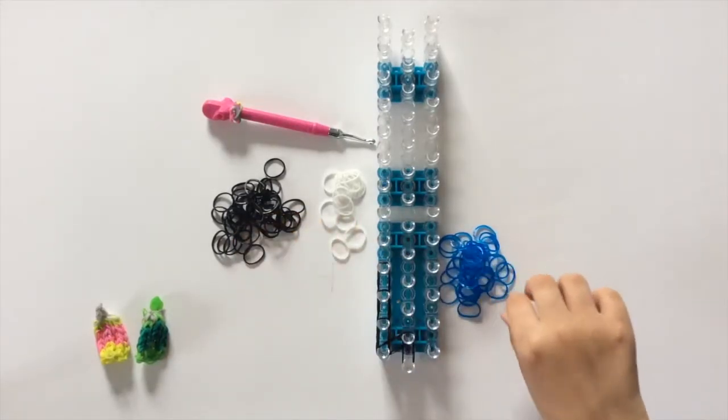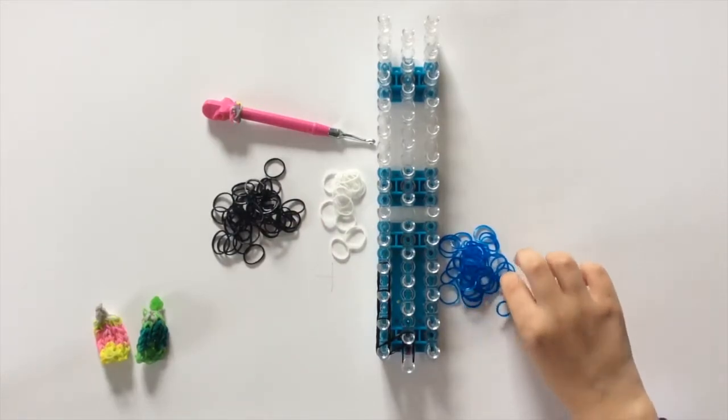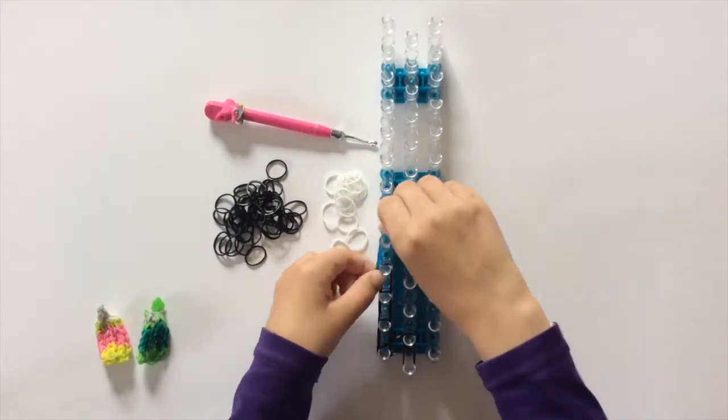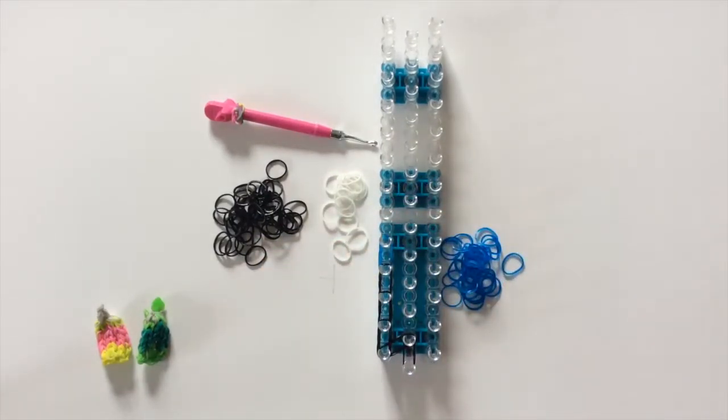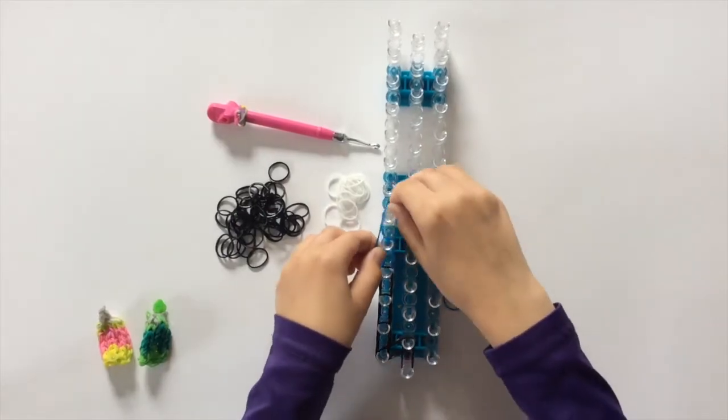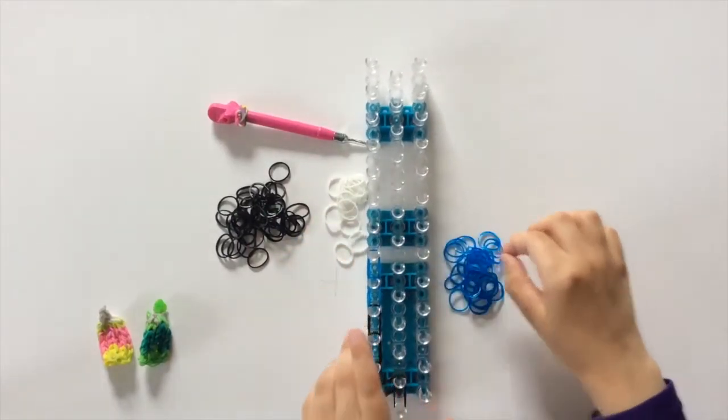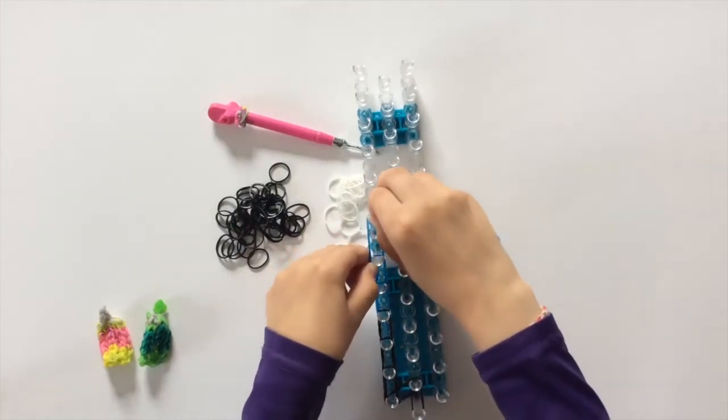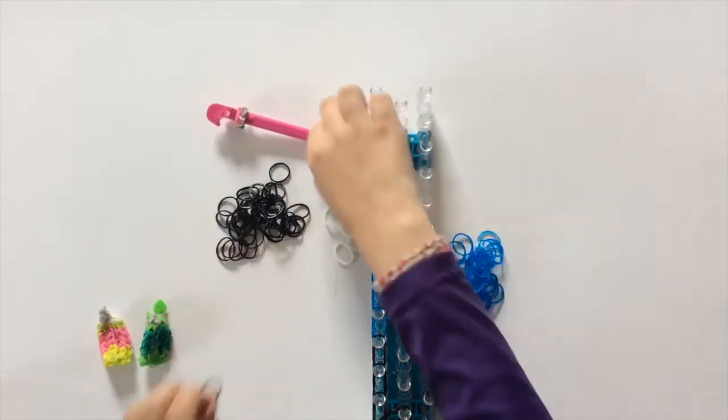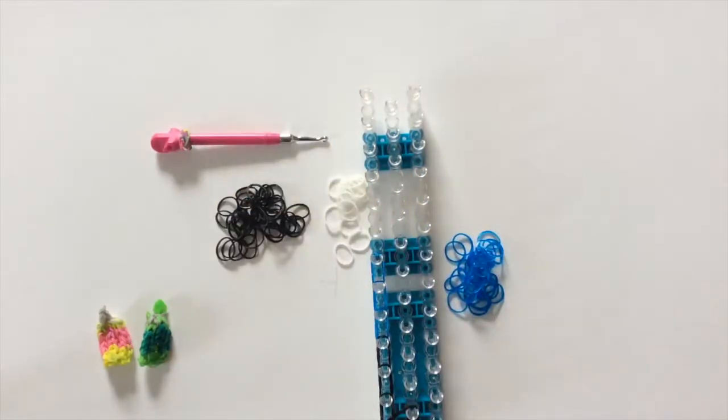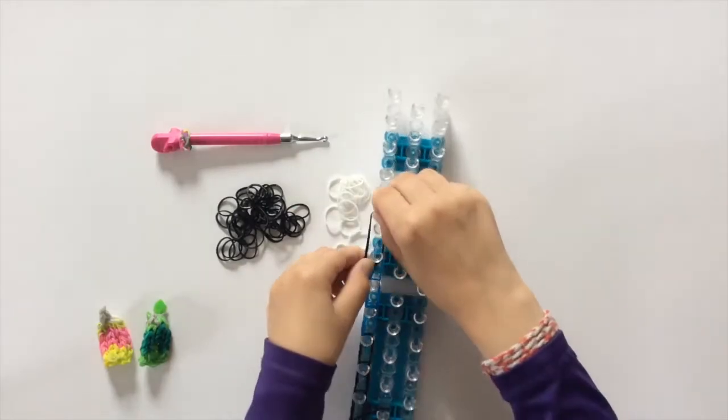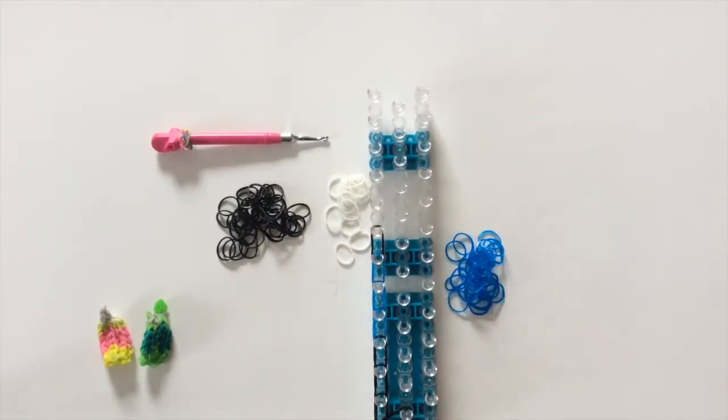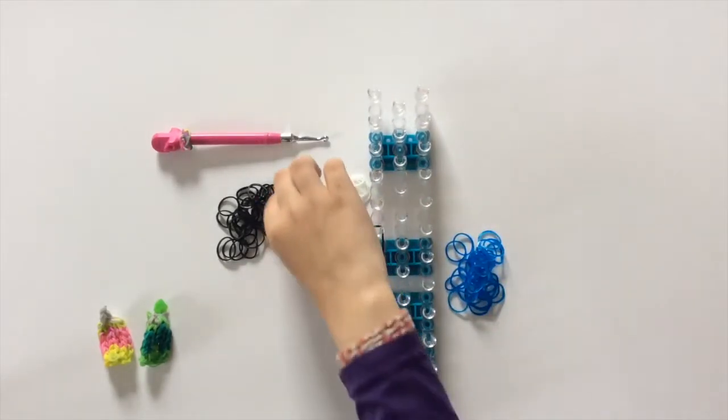Then you're just going to take two bands in your label color and go up on the same thing. Two more bands in your label color going up, and then two last bands in your label color going up like that. You're going to take one pair of your drink color going up, and now we're just going to do that same thing on the other side.